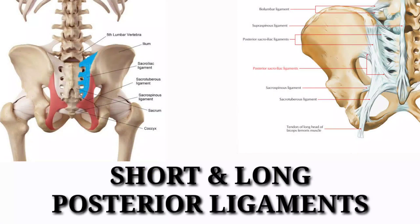The short posterior sacroiliac ligaments originate from the posterolateral side of the sacrum, run superiorly and laterally, and insert at the iliac tuberosity and PSIS. The long ligaments originate from the 3rd and 4th sacral segments and insert onto the PSIS. These ligaments to some extent limit nutation of the sacrum.